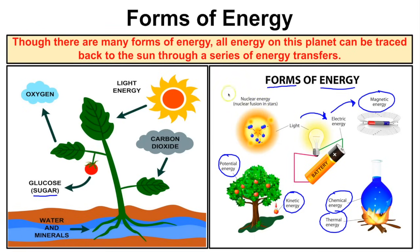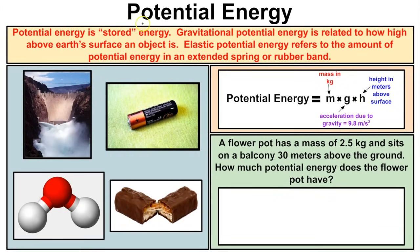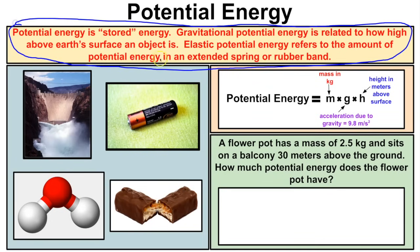Energy is not created nor destroyed — it's just transferred from one form to another through different physical or chemical processes. Now let's take a look at potential energy and kinetic energy. Potential energy is stored energy. Gravitational potential energy is related to how high above Earth's surface an object is, and elastic potential energy refers to the energy stored in an extended spring, rubber band, slinky, or coil.